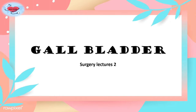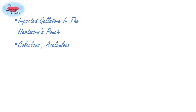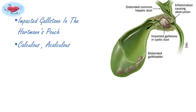First comes acute cholecystitis. Commonly it occurs in a patient with pre-existing chronic cholecystitis, but it can also occur as a first presentation. The usual cause is an impacted gallstone in Hartmann's pouch, which obstructs the cystic duct. This causes cholecystitis, and we can classify it as acute calculous cholecystitis and acute acalculous cholecystitis.